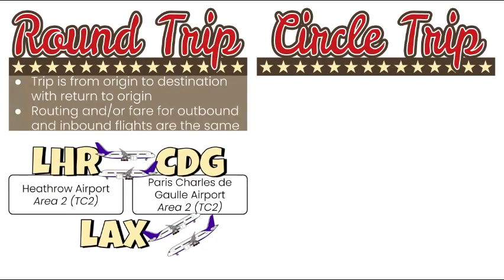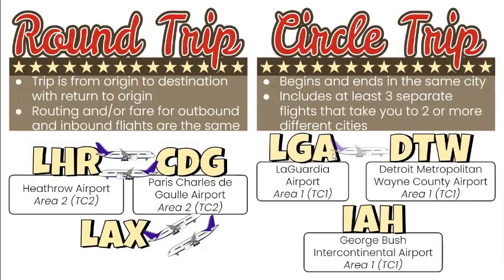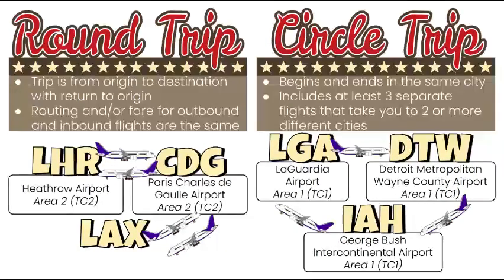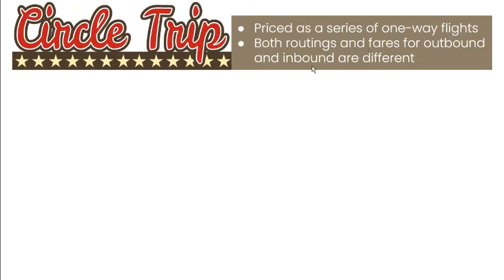Let's talk about the circle trip to differentiate it from a round trip. A circle trip usually includes multiple stops along the route of travel before returning to the point of origin. For example: LaGuardia Airport to Detroit Metropolitan Wayne County Airport, where the passenger stays for more than 24 hours, then goes to George Bush International Airport, stays another day, and heads back to LaGuardia. A circle trip is a journey that starts from one point and returns to the same point by a continuous or circuitous air route. It is priced as a series of one-way flights, with both routings and fares of outbound and inbound being different.